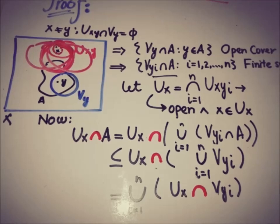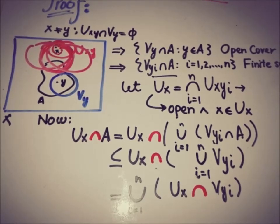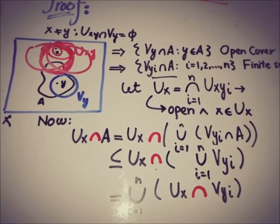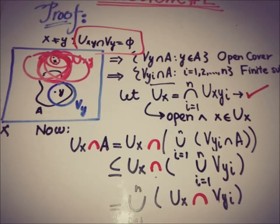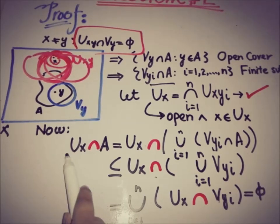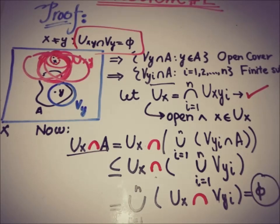Since U_x is the intersection of all U_{x,y_i}'s, and each U_{x,y_i} is disjoint from V_{y_i}, the intersection of U_x with each V_{y_i} is empty. Therefore the entire union is empty, which implies U_x ∩ A = ∅.